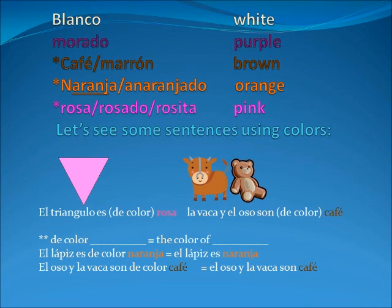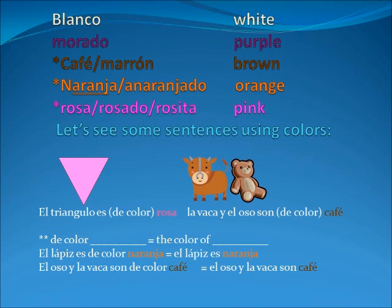Then we have rosa, rosado, and rosita. Rosa is like a rose — what color can a rose be? Red is already taken, white is already taken, so basically what we are left with is pink. Rosa — pink. Rosado and rosita also mean pink. Now pay attention to these last three colors: café, naranja, and rosa.